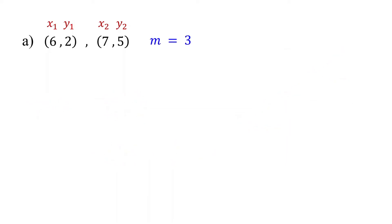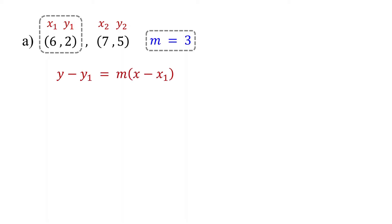The next step is to write the equation using the slope and one of the points. You can use either the first or the second point. Let's use the first point. The most straightforward form to use when you have a slope and a point is the point-slope form, where m represents the slope and x1,y1 represents a point that the line passes through.